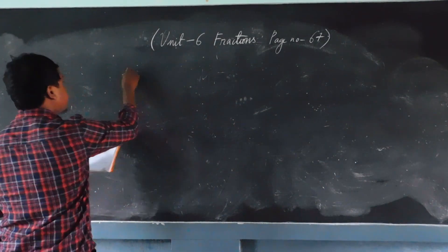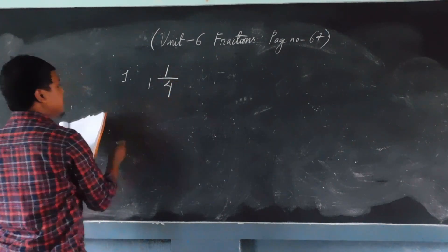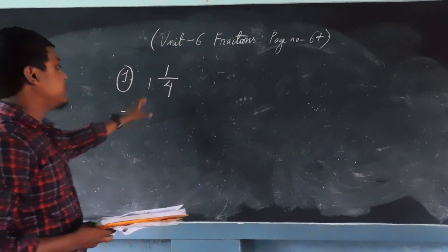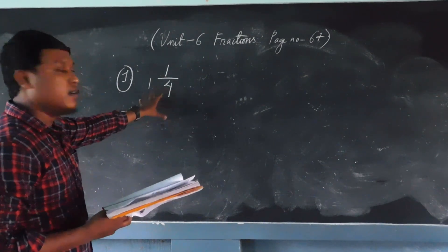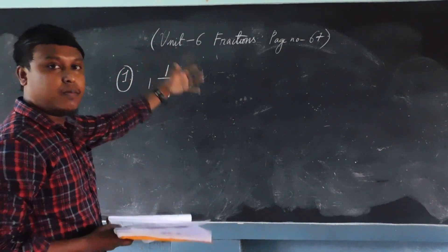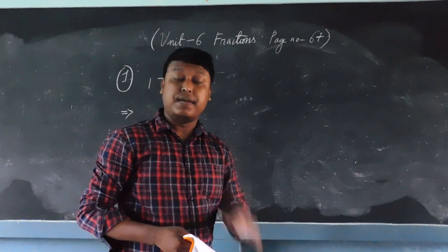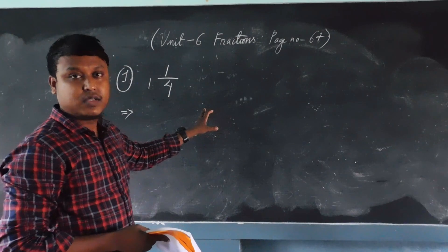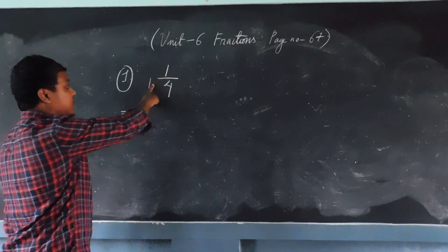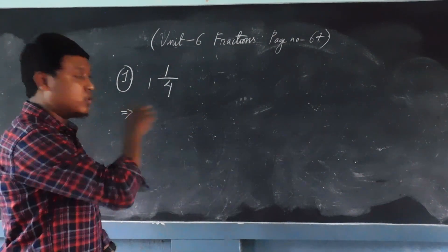The first one is 1 and 1/4. This is the quotient, which is in a mixed fraction or mixed number. Now we have to convert it into an improper fraction. The answers in the PDF might be slightly different than my explanation here, so it is up to you to follow whichever step you like according to your own convenience. So 1 and 1/4 — how to convert it into an improper fraction? I will try to form one logic for you.